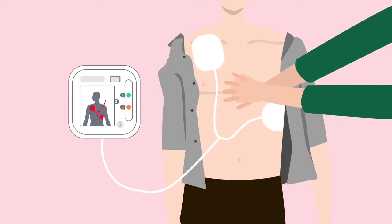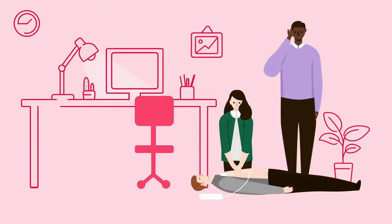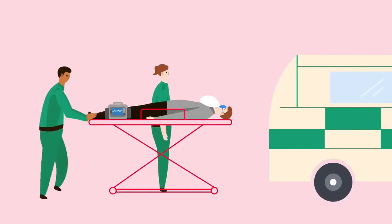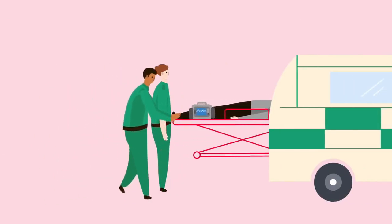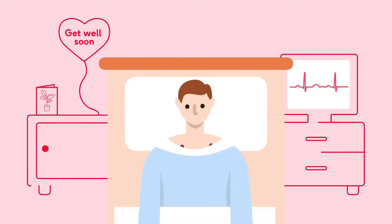There are two main types of AEDs: Public Access and Professional Use. Public Access AEDs can be found in airports, community centres, schools, government buildings, hospitals and other public locations. They are intended to be used by laypeople who have received minimal training.